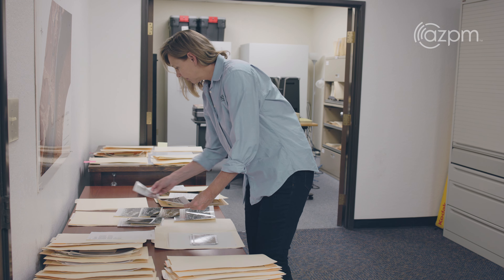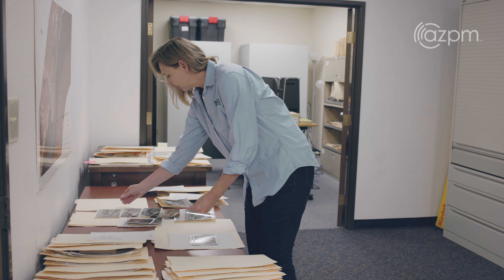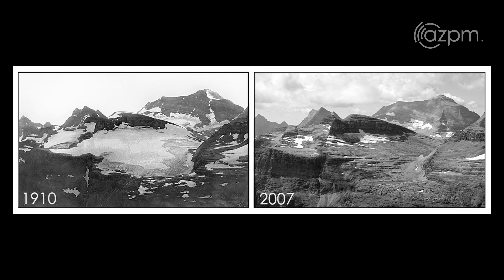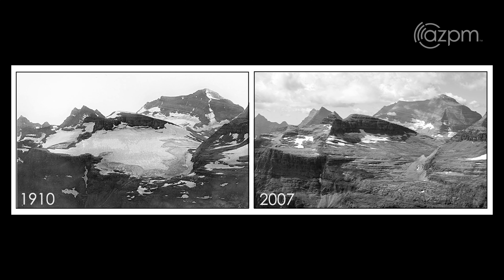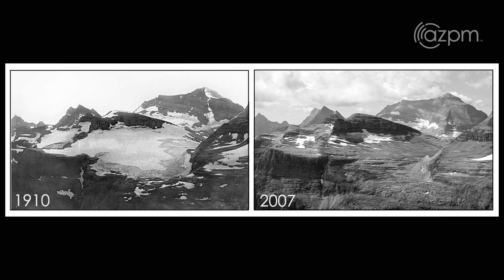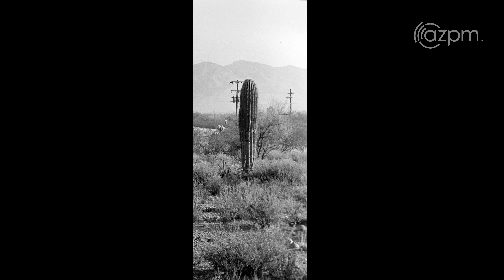Repeat photography came about through the work of a Bavarian mathematician in the late 1800s. He was using photo surveys to study glaciers in the Alps, and then it was picked up by glaciologists in the U.S., and it progressed from there.